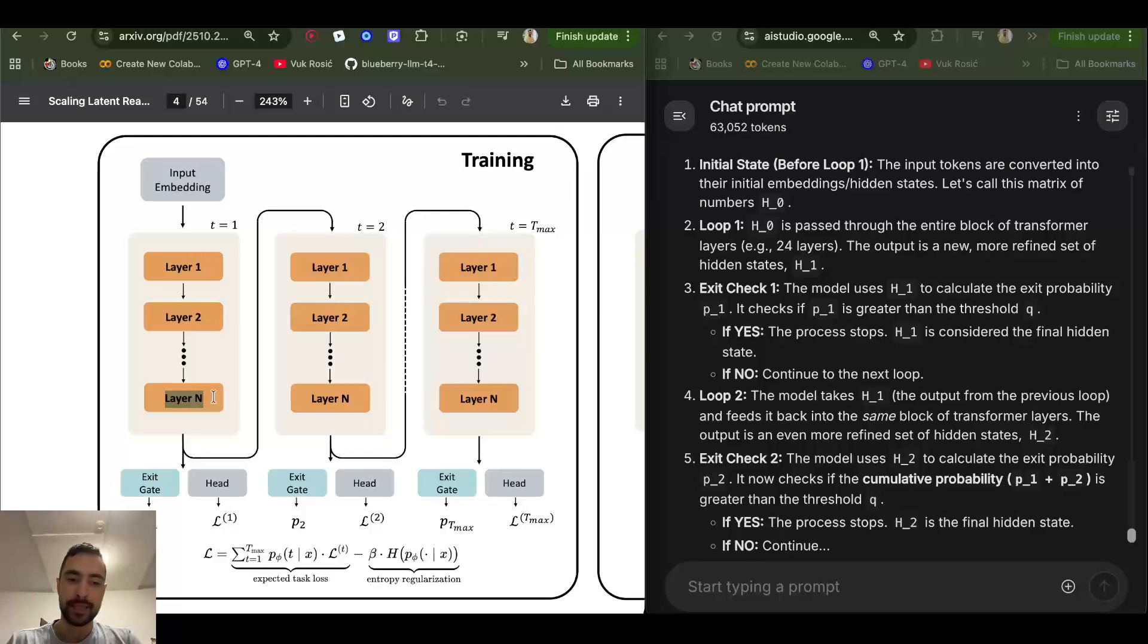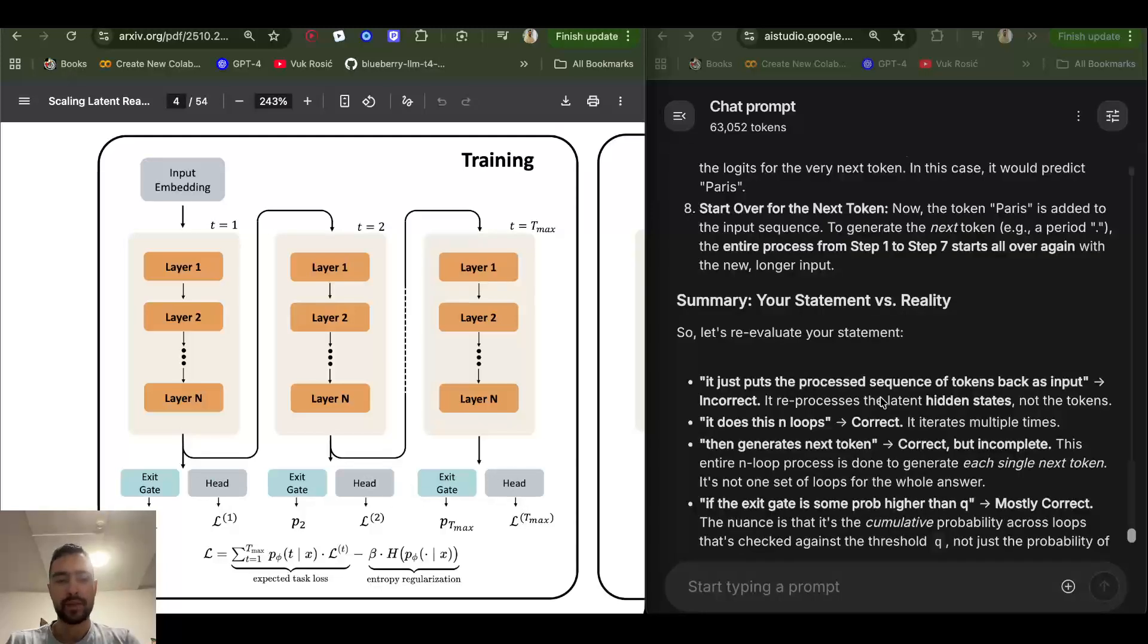Let's say we get to the last layer. Now, every token is well processed. If this exit gate gives probability of exiting lower than the threshold P, then we just go back with those processed tokens. They just go back into the first layer and get processed even further now. And so in the next pass, we're going to add up the first exit probability plus the second exit probability. And if they are together over this threshold P, then it will exit.